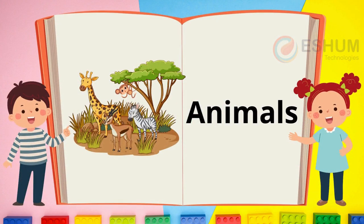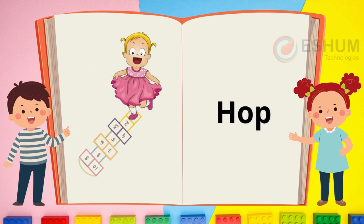Words. Animals. In the picture you can see four different animals: there is a giraffe, a monkey, a zebra, and one other animal. What is the other animal? Hop. In the picture the girl goes up and down — she hops.